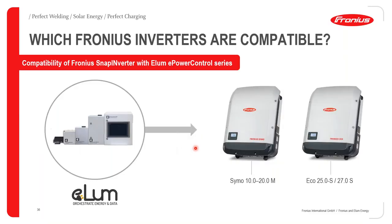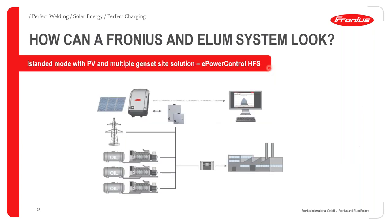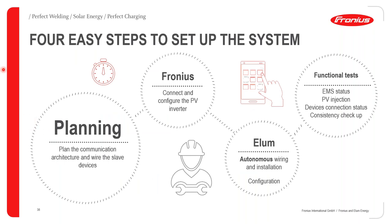Key compatibilities between ELUM and Fronius: all snap inverters are compatible with PV genset solutions. For ELUM systems, which are mostly commercial installations, Fronius recommends the Symo 10–20 kW and the Eco 25–27 kW commercial range. Setting up the system is straightforward: plan the communication architecture, identify slave devices, connect and configure the PV inverters.